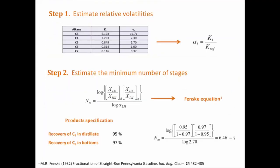Once the K values have been determined, we can proceed to estimate the relative volatilities by dividing the K value of the component and the K value of the heavy key. In this case, the K value of C6.